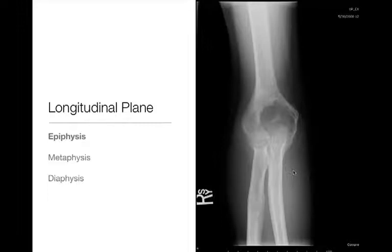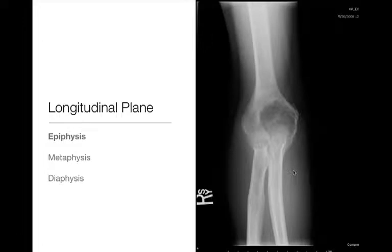In the longitudinal plane, we're describing whether the lesion is in the epiphysis, the metaphysis, or the diaphysis. This is helpful because some lesions prefer specific locations — for example, chondroblastomas arise in the epiphysis, and knowing it's an epiphyseal lesion helps us narrow the differential diagnosis. The majority of lesions tend to occur in the metaphysis and diaphysis of long bones, so that distinction may be less specific, but it's still a useful differentiating point.